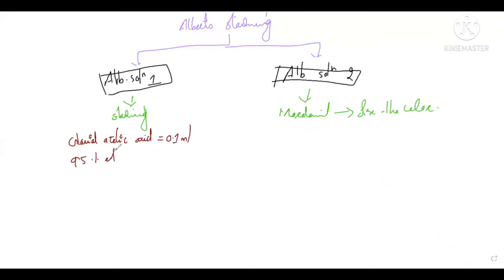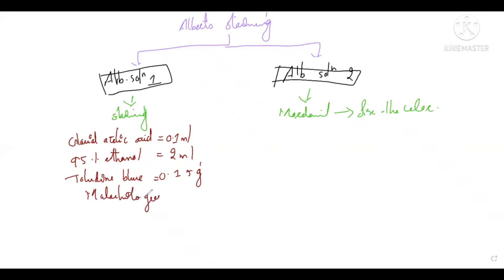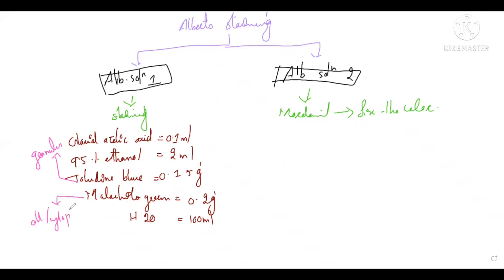Albert solution 1 contains: glacial acetic acid 0.1 ml, 95% ethanol 2 ml, Toluidine blue 0.15 gram (specifically for staining metachromatic granules), malachite green 0.2 gram (for staining the bacterial cytoplasm), and water to make 100 ml. Toluidine blue is for granule staining and malachite green is for bacterial staining, so after staining you can see granules in bluish-purple and bacteria in green.